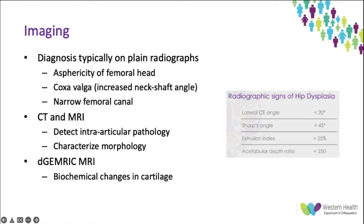CT and MRI can provide further information about morphology and intra-articular pathologies. Newer processes like advanced biochemical MRI techniques — such as gadolinium-enhanced MRI of cartilage — can detect changes in articular cartilage such as chondral injury before it becomes radiographically evident. It is highly sensitive to arthritic changes and can actually change management in some older patients.